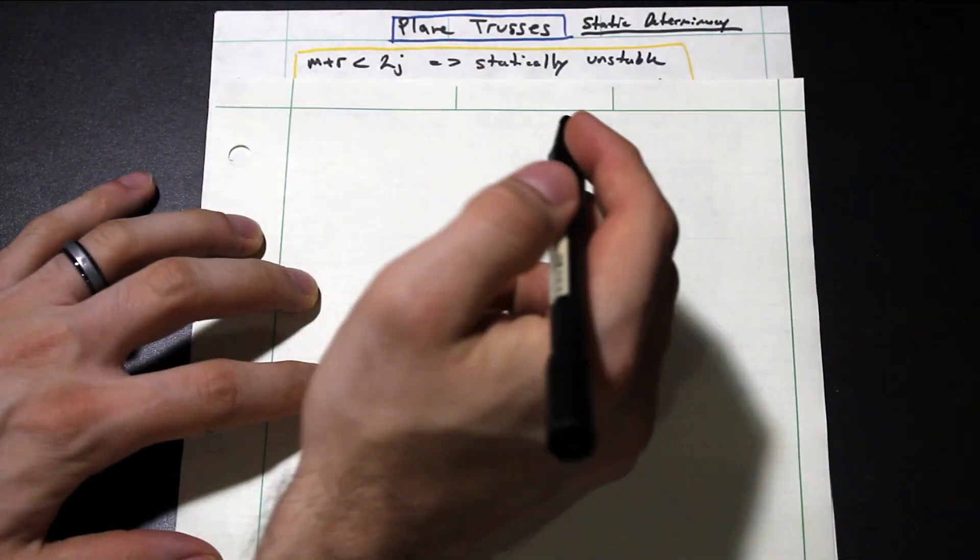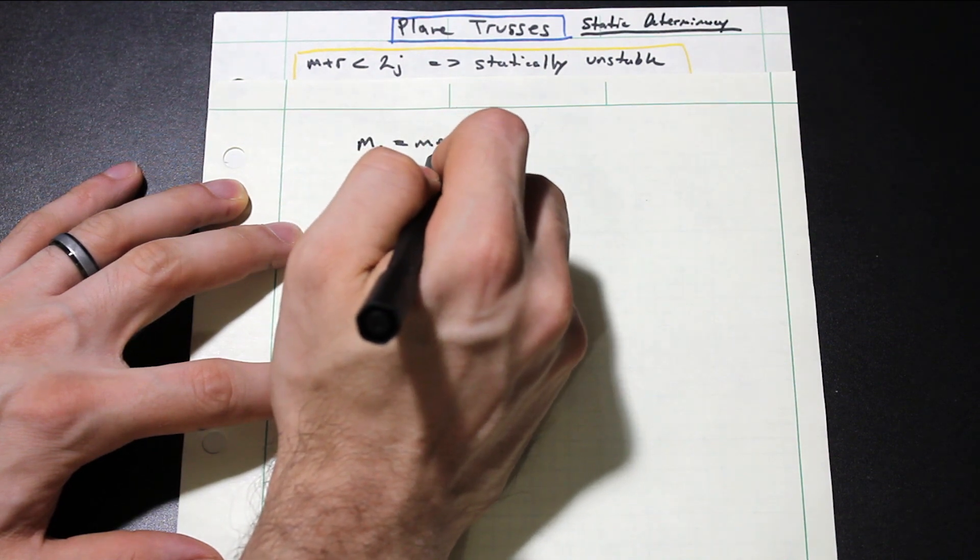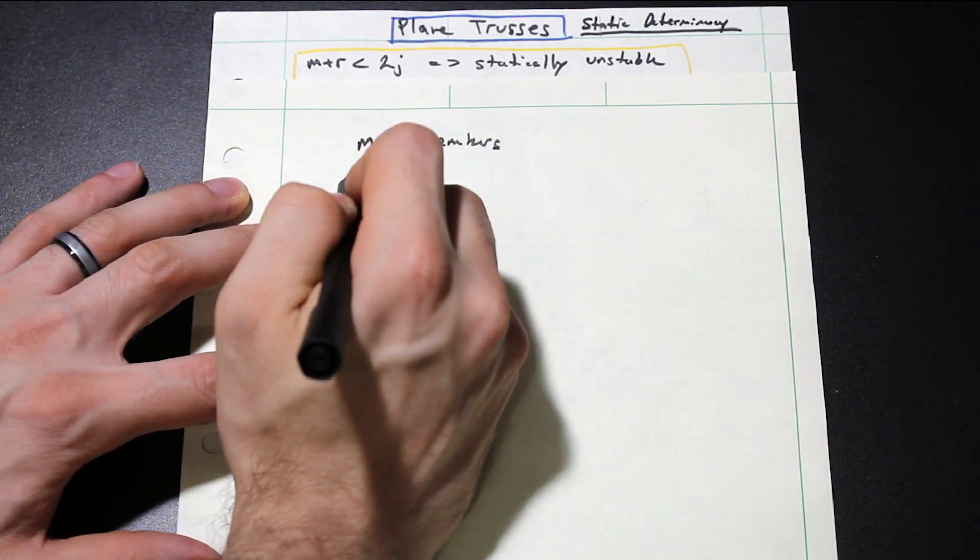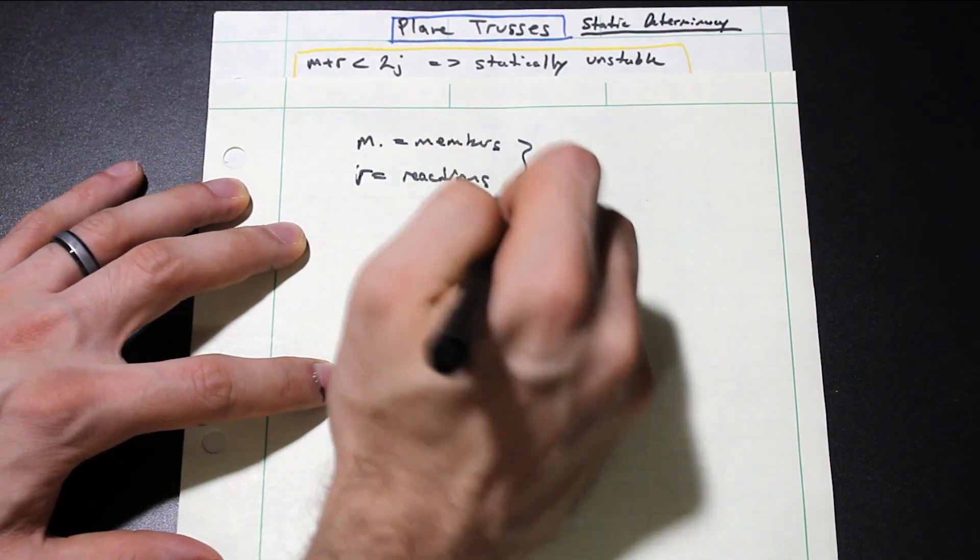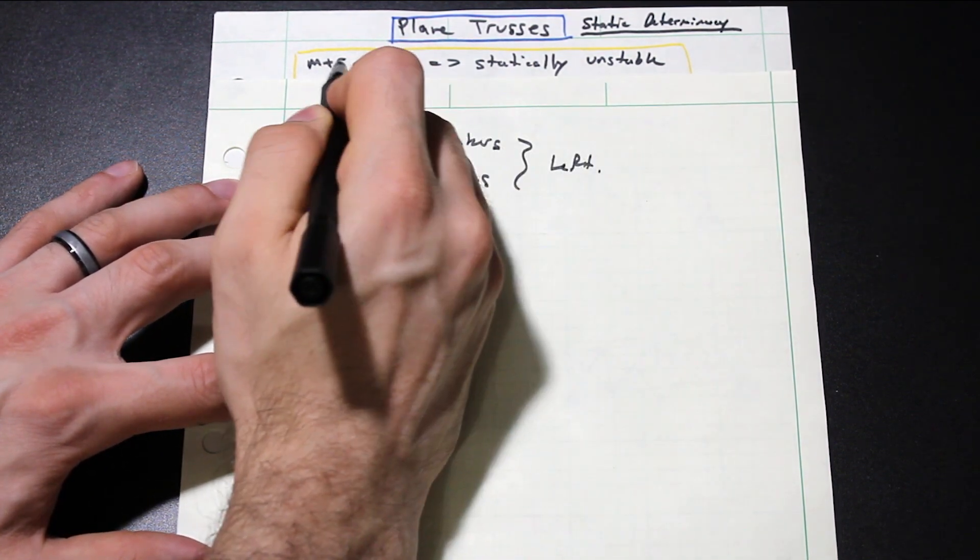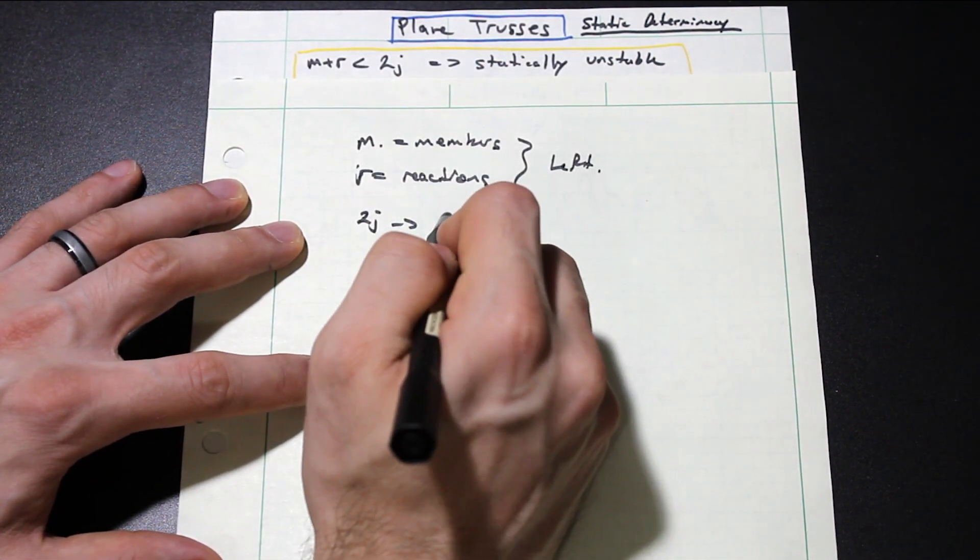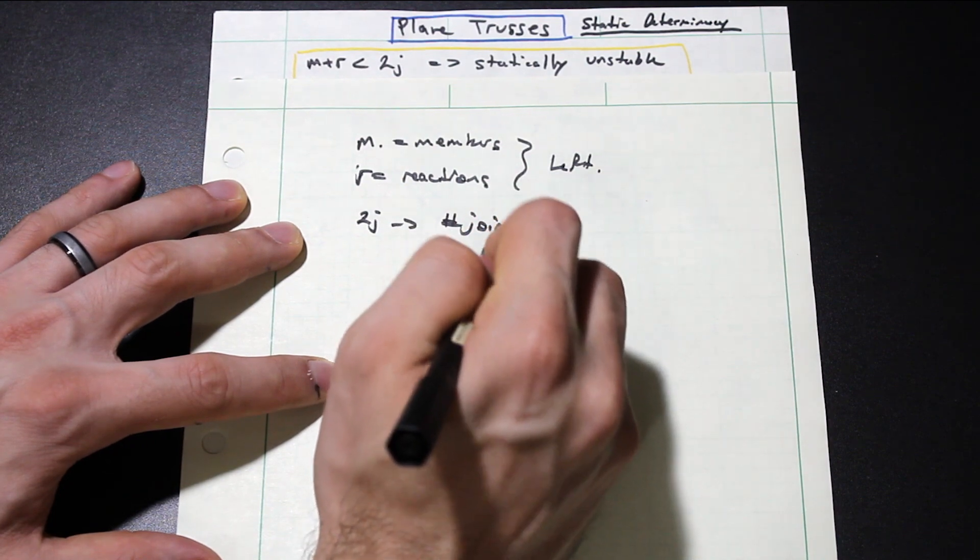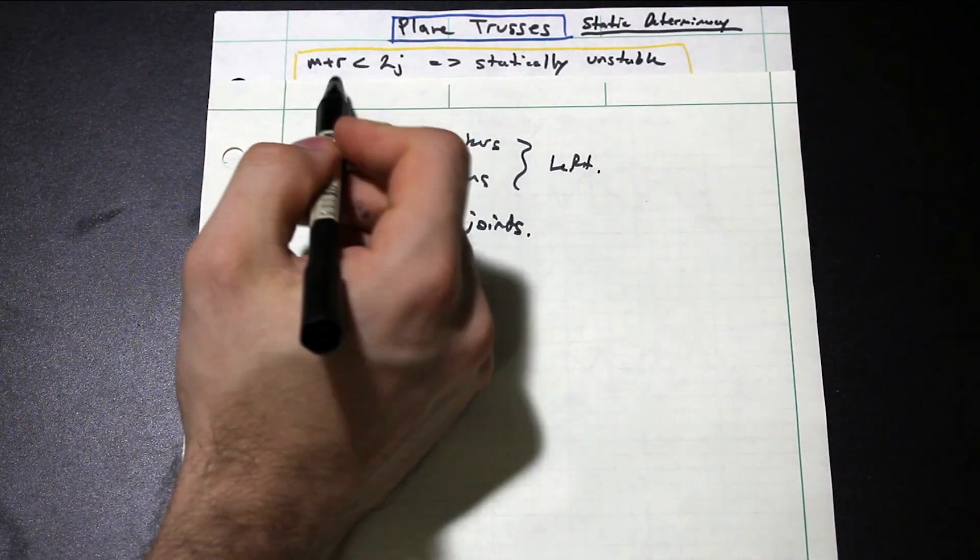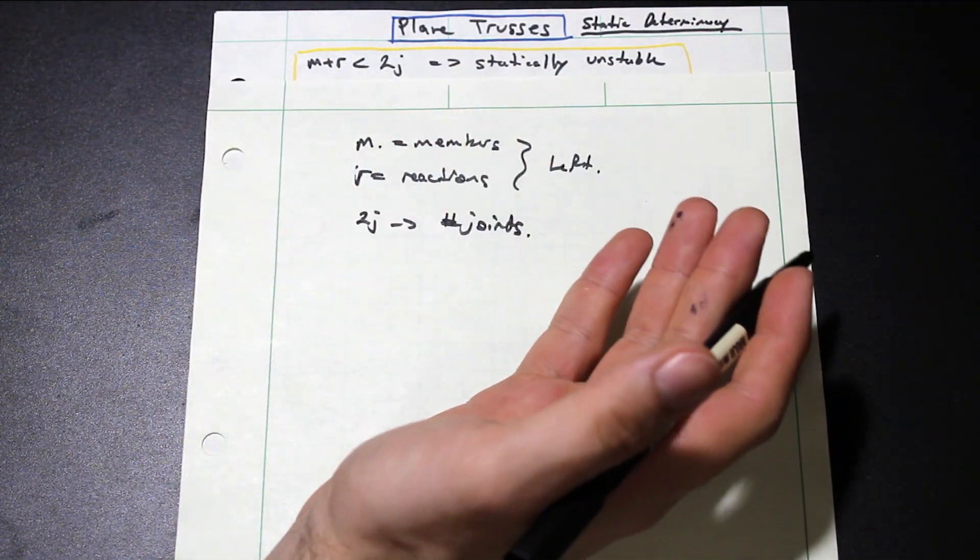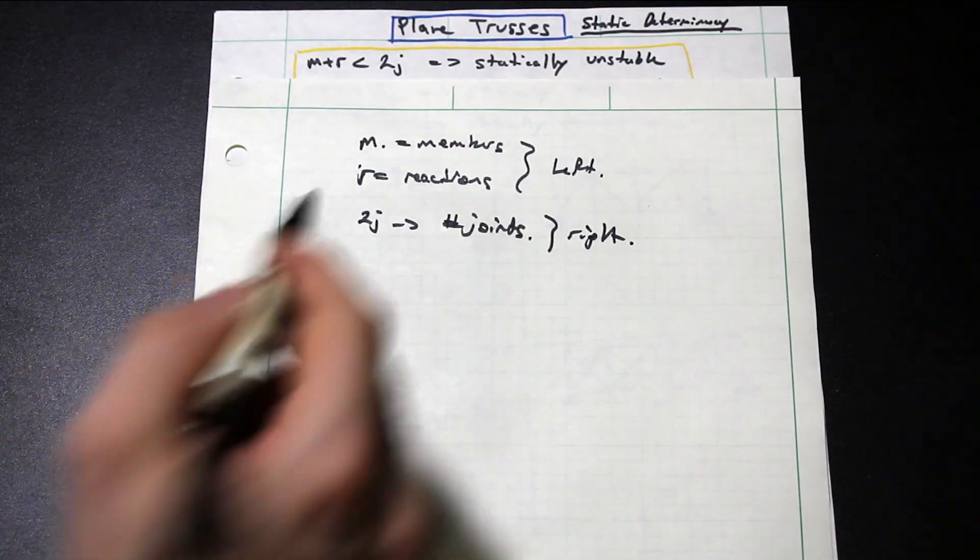Let's take a look at the first one statically unstable. So we have M, which is the number of members in the truss. We have R, which is the number of reactions. And you'll see that these are on the left side of the equation. And on the right side of the equation, we have 2J, where J is the number of joints in the truss. So what does this equation mean? It actually really helps to kind of understand what this means instead of just plugging it in.